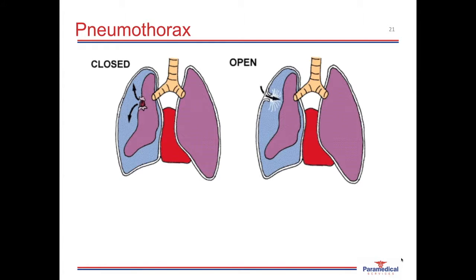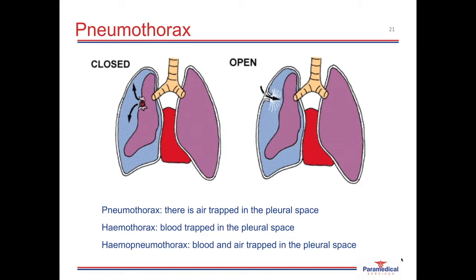Pneumothoraces result from damage to either the visceral or parietal pleura, causing air to leak into the pleural space and causing partial or full collapse of the affected lung. The pleural space can fill with air, blood, or both. A pneumothorax is air trapped in the pleural space; a hemothorax is blood; and a hemopneumothorax is both blood and air. For this lecture we will focus on the pneumothorax.